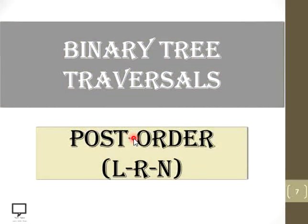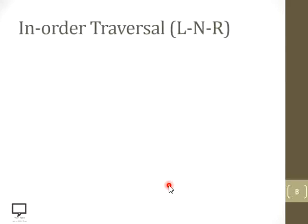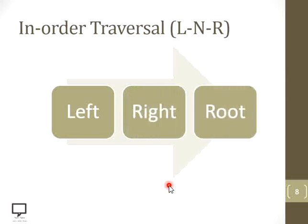Let's start with binary tree traversal in post-order, where we follow the sequence: left node or left subtree, then right node or right subtree, and then the root node at the end — because it is post-order. So we have to first go to the left subtree, then the right subtree, and at the end process the root node. The position of the root node will be after the left and right subtrees.